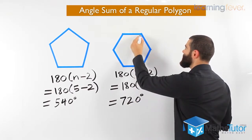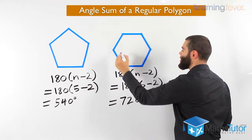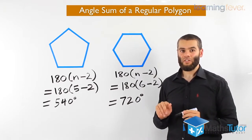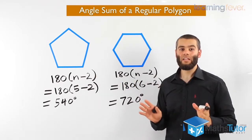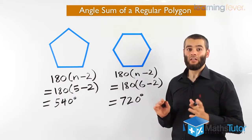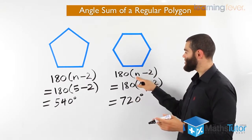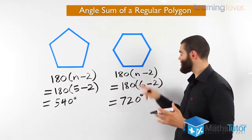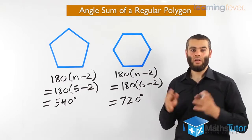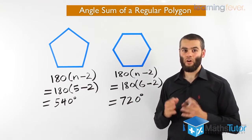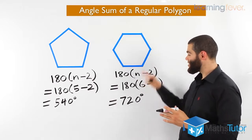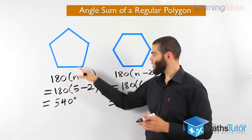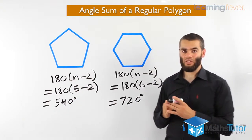So the angle sum of a hexagon is 720 degrees — meaning this angle, plus that one, plus that one, plus that one, plus that one, plus that one all equal 720 degrees. This formula can be used for any polygon. A decagon has ten sides, so replace n with ten; a heptagon has seven sides, replace n with seven. The angle sum is 720 for a hexagon and 540 for a pentagon.